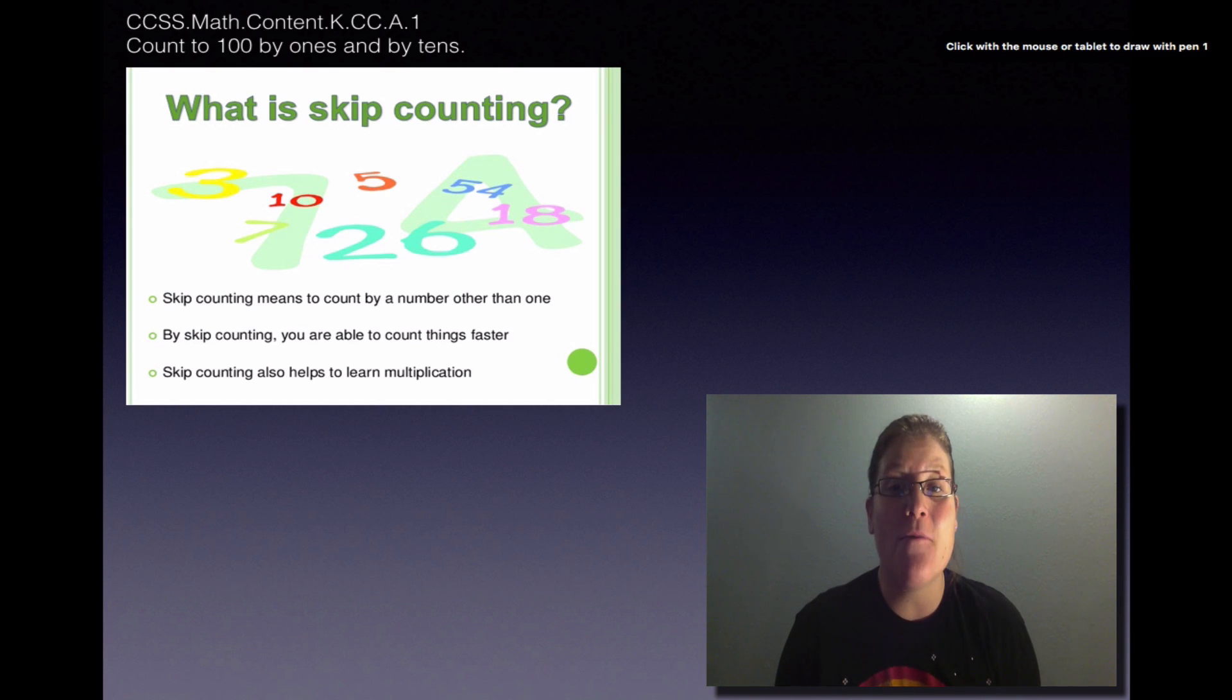Hey! Today we're going to count by 10s all the way to 100. It's called skip counting. Skip counting just means we're going to count by a number other than 1. When you skip count, you can count things faster, and skip counting helps you learn your multiplication. Let's get ready!